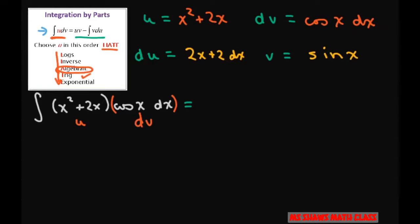u is x squared plus 2x, and v is sine x. So we have (x squared plus 2x) sine x minus the integral of sine x times du, which is (2x plus 2) dx.